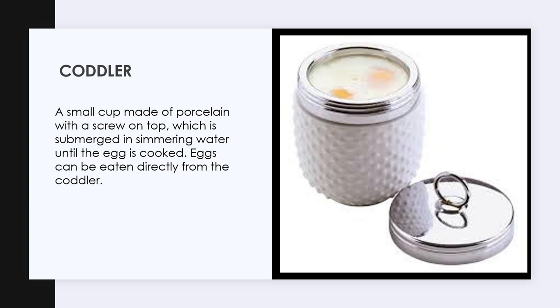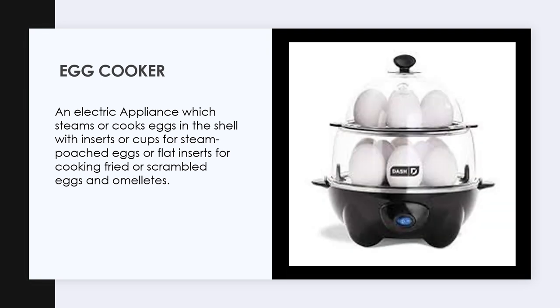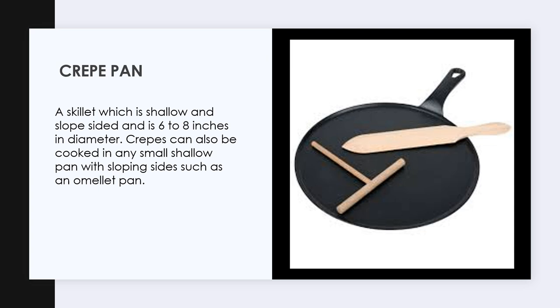A coddler is a small cup made of porcelain with a screw-on top, which is submerged in simmering water until the egg is cooked. Eggs can be eaten directly from the coddler. An egg cooker is an electric appliance which steams or cooks eggs in the shell with inserts or cups for steamed or poached eggs, or flat inserts for cooking fried or scrambled eggs and omelettes. A crepe pan is a skillet which is shallow and slope-sided, 6 to 8 inches in diameter. Crepes can also be cooked in any small shallow pan with sloping sides, such as an omelette pan.